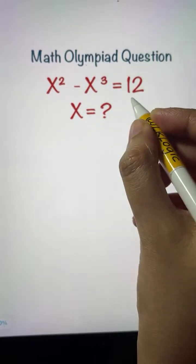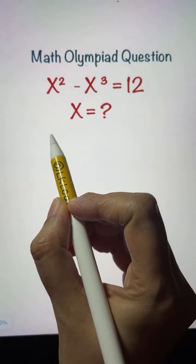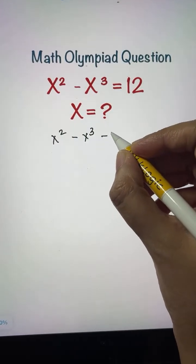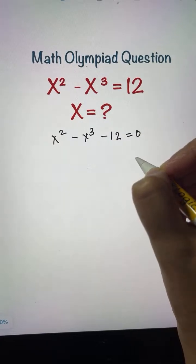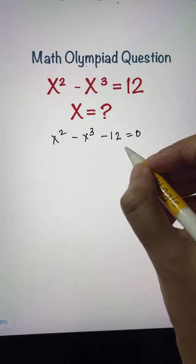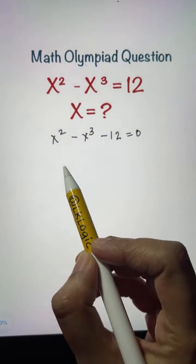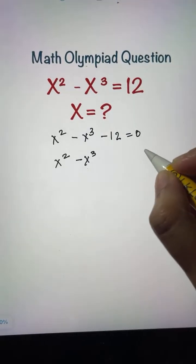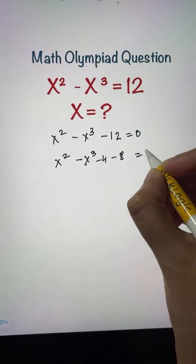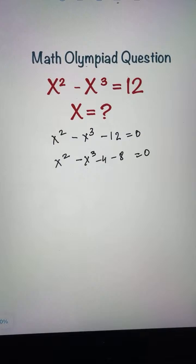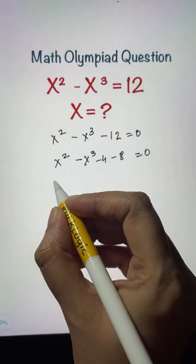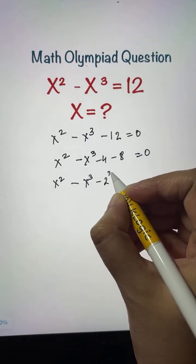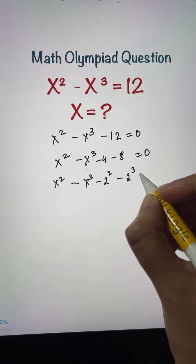First of all, I'm going to bring all the terms to one side. So it will be x squared minus x cubed, and then 12 brought over becomes negative 12, equals 0. Now I'm going to split this negative 12 into two terms: negative 4 and negative 8. I'll write negative 4 as negative 2 squared, and negative 8 as negative 2 cubed, which equals 0.